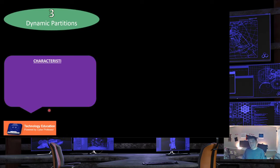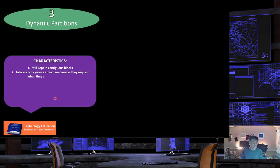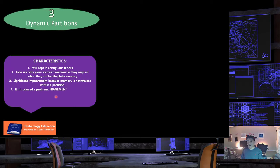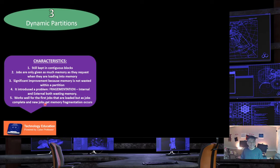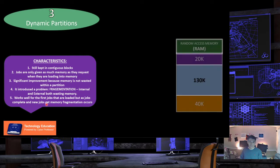Now comes dynamic partitions, the third early memory management scheme. Jobs are still kept in contiguous blocks, but are only given as much memory as they request when loading. This is a significant improvement because memory is not wasted within a partition. However, it introduces fragmentation — both internal and external — which wastes memory. It works well for the first set of jobs loaded into memory, but as those jobs complete and memory is deallocated, fragmentation occurs within the memory space.